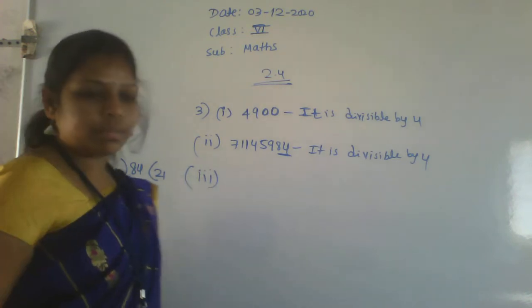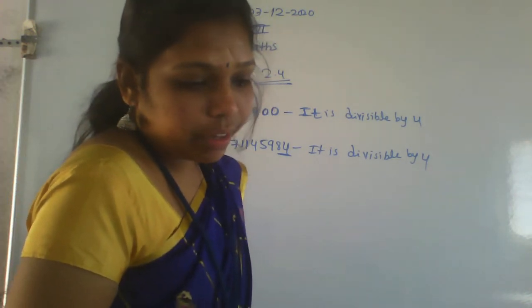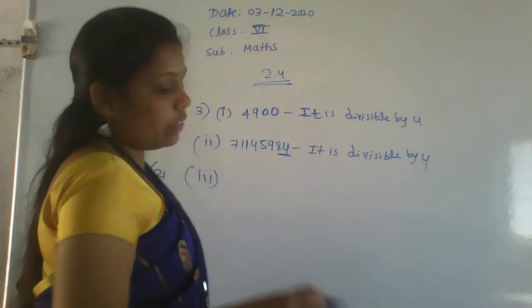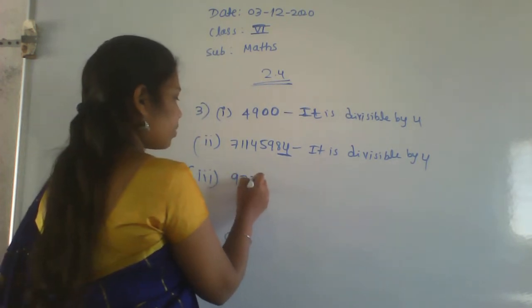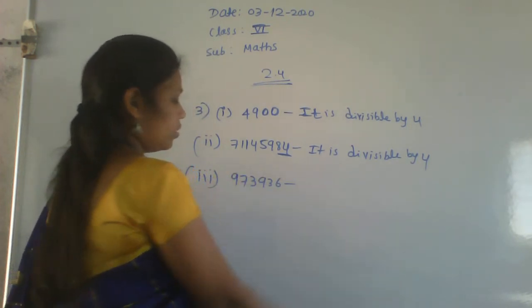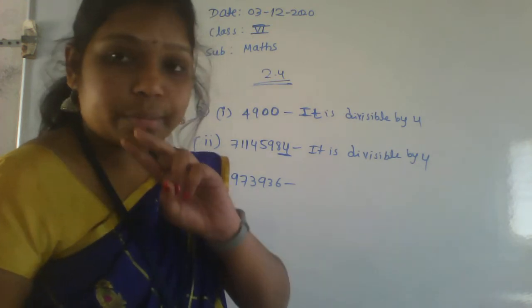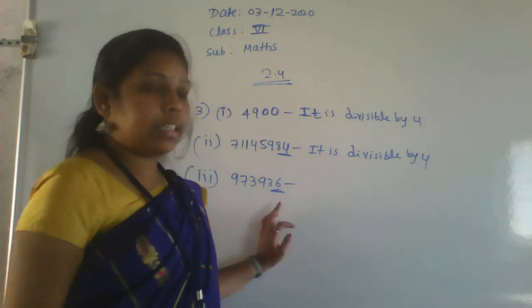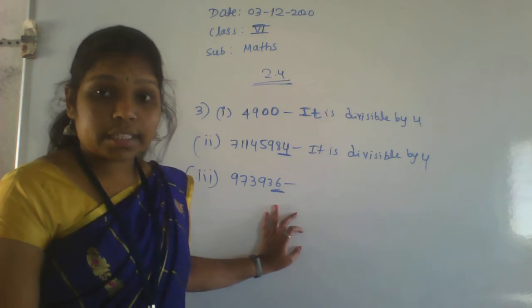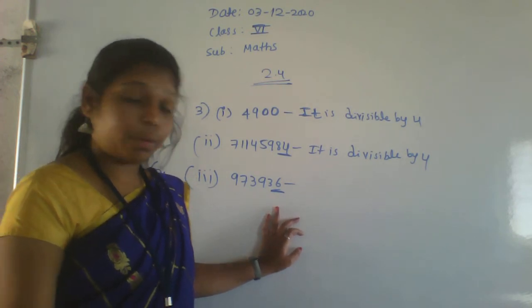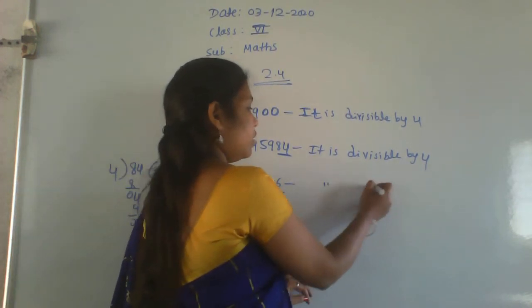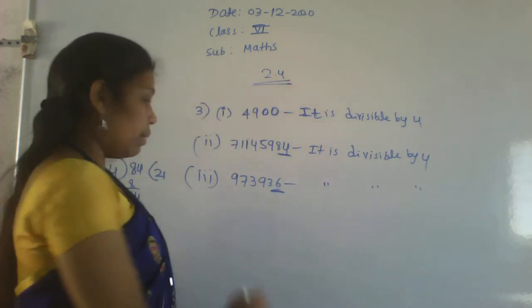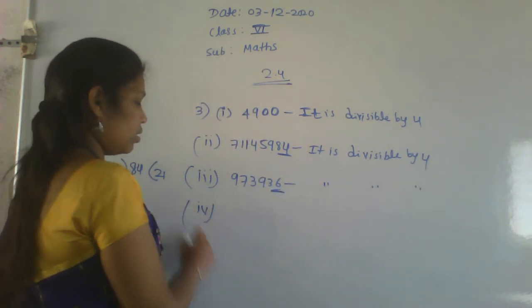Third number: 9736. Observe only the last 2 digits, which are 36. Is 36 divisible by 4? Yes, 4×9=36. Therefore it is divisible by 4.